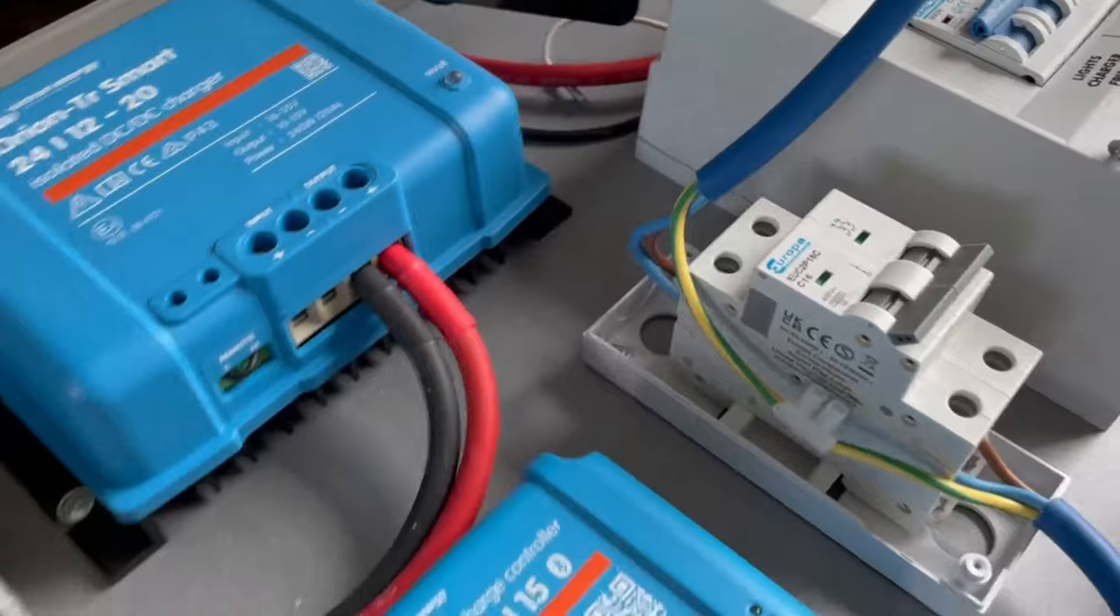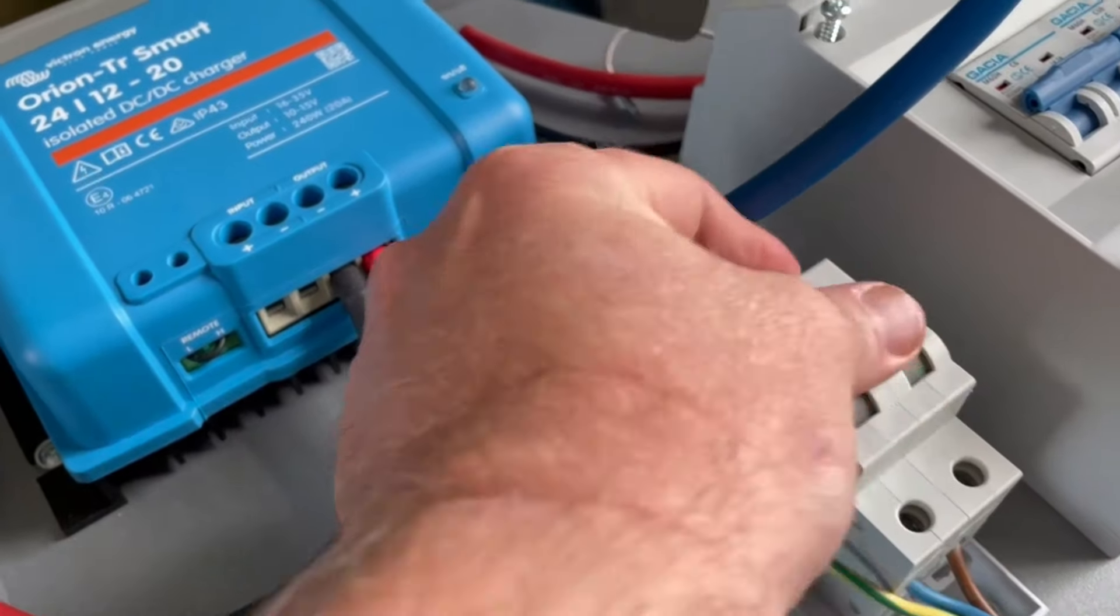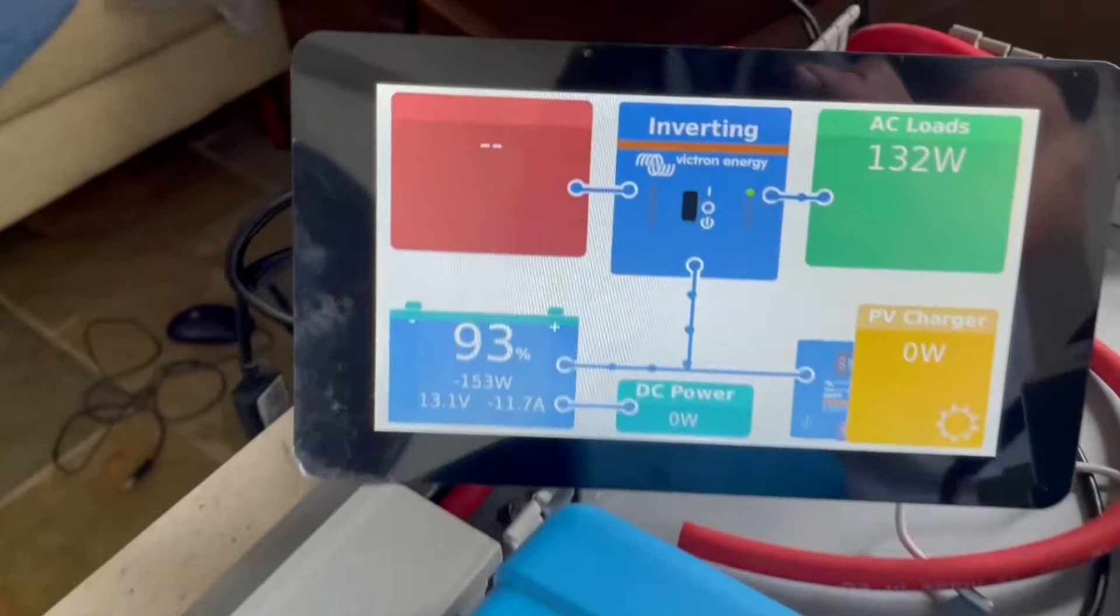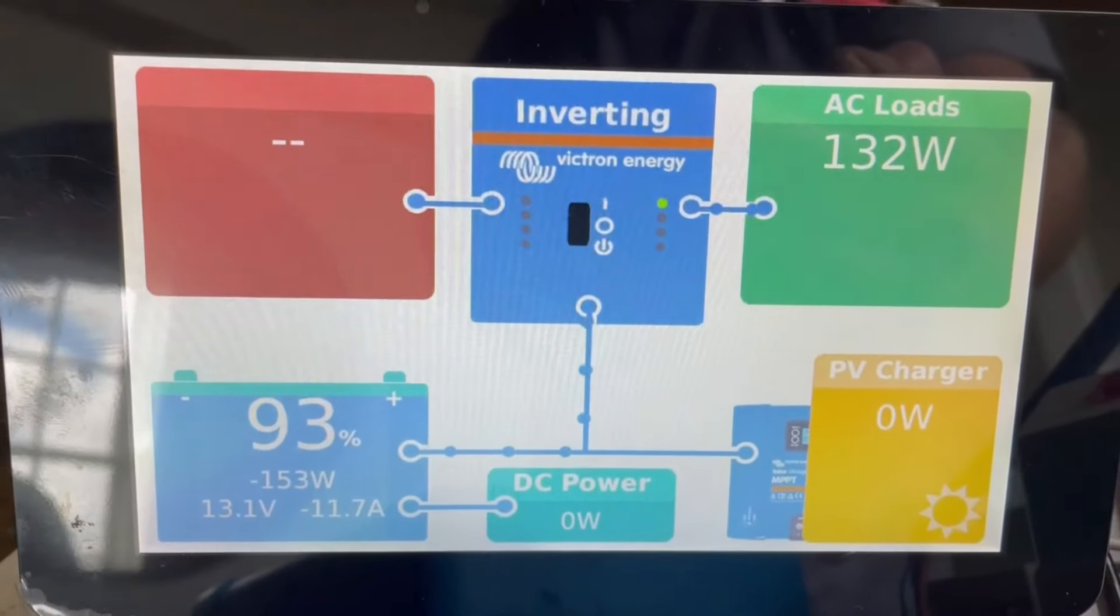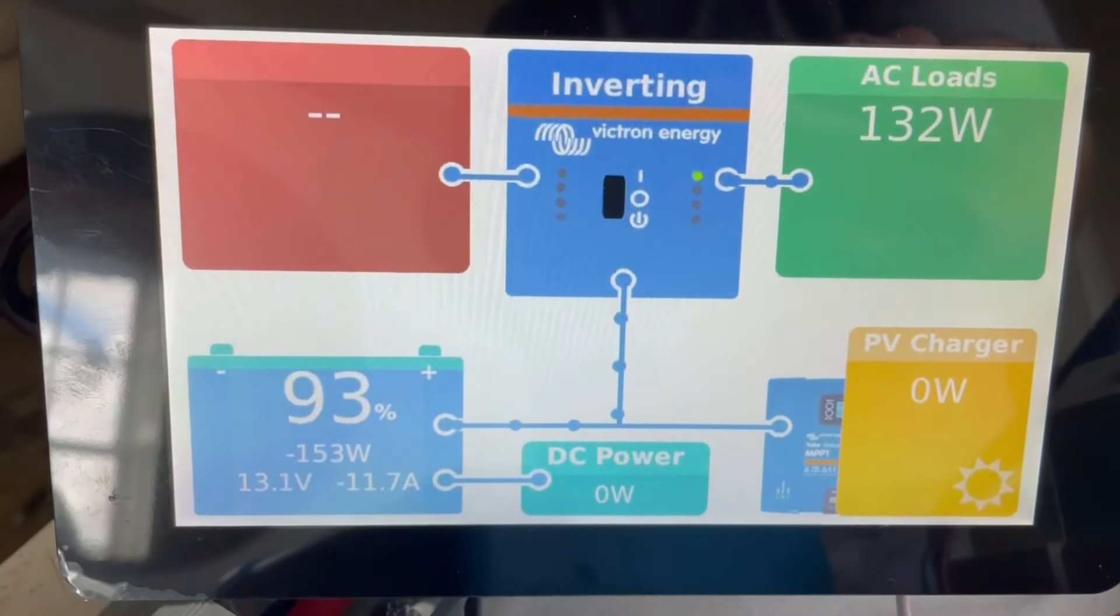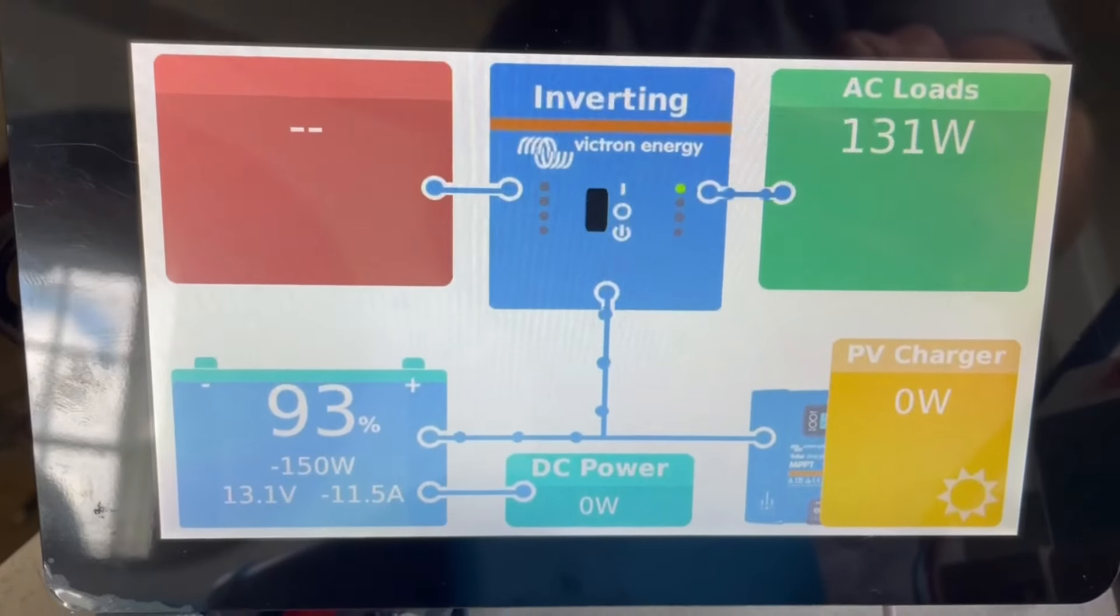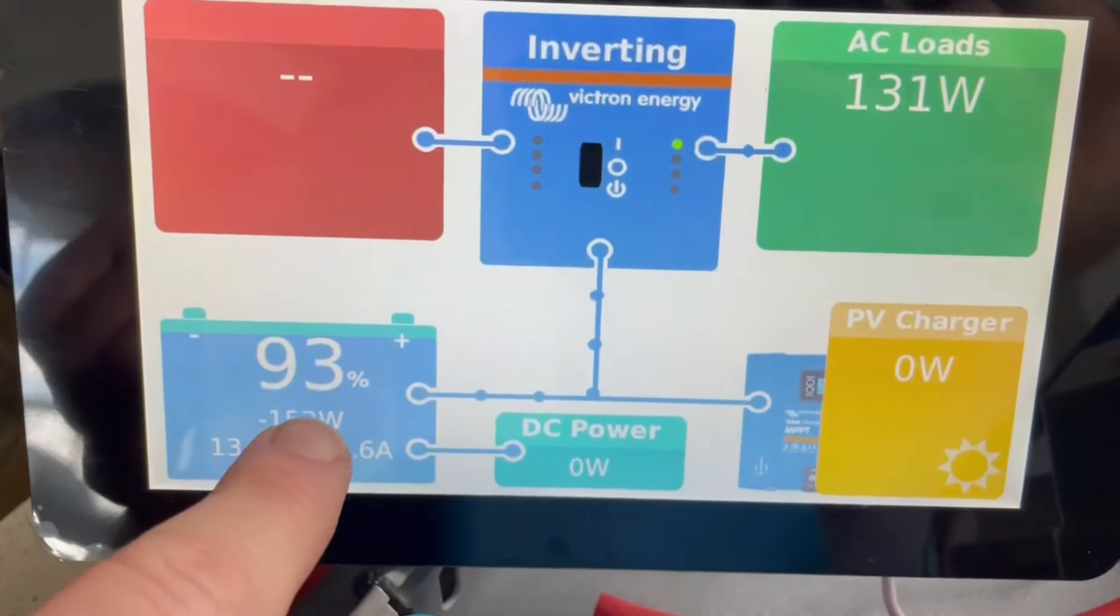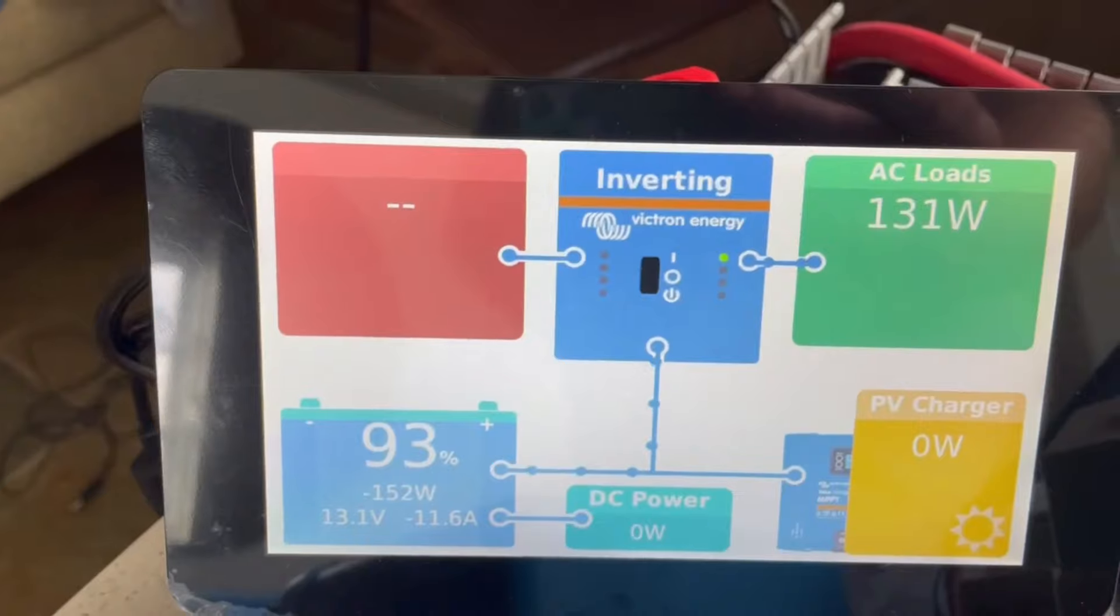What I'm going to do now is switch the mains on through this isolator and see what happens. It should change from inverting to charging this battery while maintaining the load at the same time.